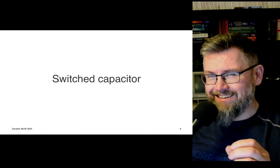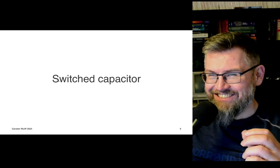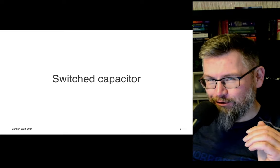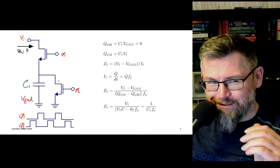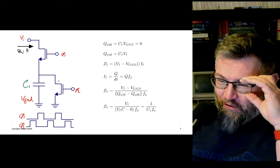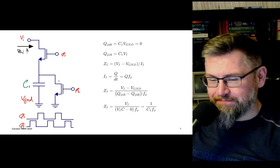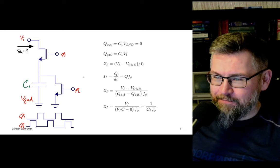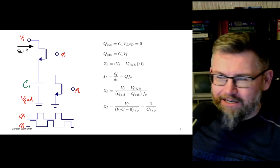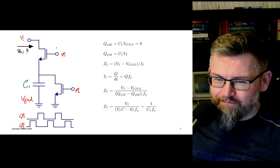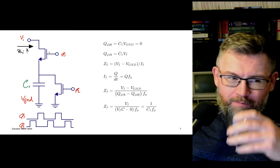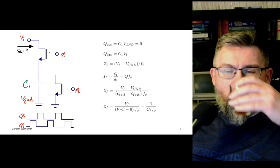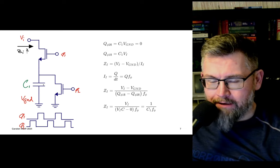Switch capacitor circuits are slightly different than regular continuous time circuits. If we look at this circuit — we have a capacitor and two NMOS transistors. The NMOS transistors will be conductive, or on, when we have a high voltage at the gate.